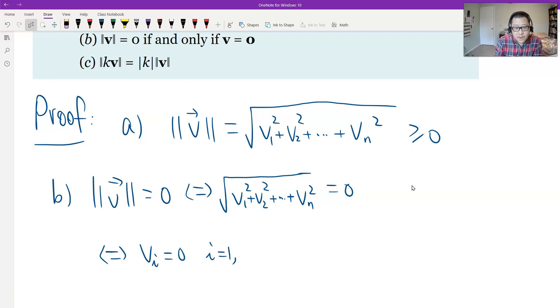And therefore, each V should be zero. This is just equivalent to any Vi equals zero, i from 1, 2, to n. And this means the vector V is a zero vector. Vi is the component of the vector V.